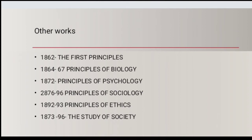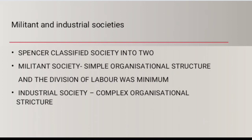He passed away in December 1903. We will now discuss the theory of social evolution. Charles Darwin's organic evolution was a theory of biological organisms, not a theory of human society.